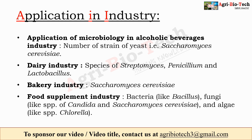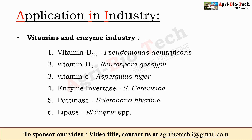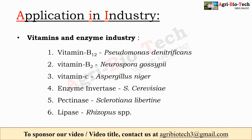In the vitamins and enzyme industry, vitamins are manufactured by fermentation technology using different microbial sources. Vitamin B12 is manufactured using Pseudomonas denitrificans. Neurospora gossypii is used for manufacturing vitamin B2, and Aspergillus niger for vitamin C. Various enzymes are also produced: invertase from Saccharomyces cerevisiae, pectinase from Sclerotinia libertiana, and lipase from Rhizopus species.